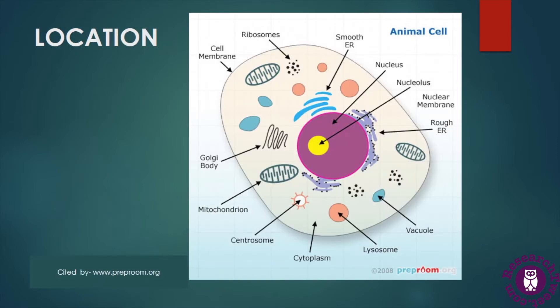Now let's understand about the location of lysosome. Lysosome is found in the cytoplasm of the cell, embedded in the cytoplasm, and is called a cytoplasmic organelle. Basically they are small spherical vesicle-like structures filled with different types of digestive hydrolytic enzymes, and they are responsible for digestion and different types of other functions in the cell.